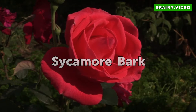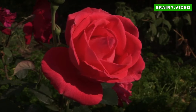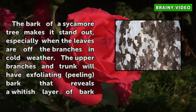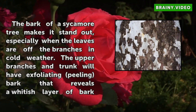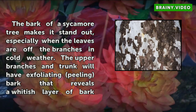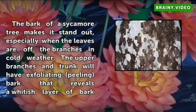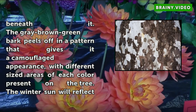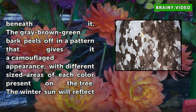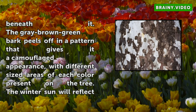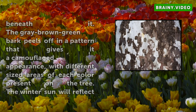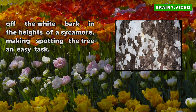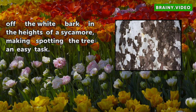Sycamore bark. The bark of a sycamore tree makes it stand out, especially when the leaves are off the branches in cold weather. The upper branches and trunk will have exfoliating peeling bark that reveals a whitish layer of bark beneath it. The grey-brown-green bark peels off in a pattern that gives it a camouflaged appearance, with different sized areas of each color present on the tree. The winter sun will reflect off the white bark in the heights of a sycamore, making spotting the tree an easy task.